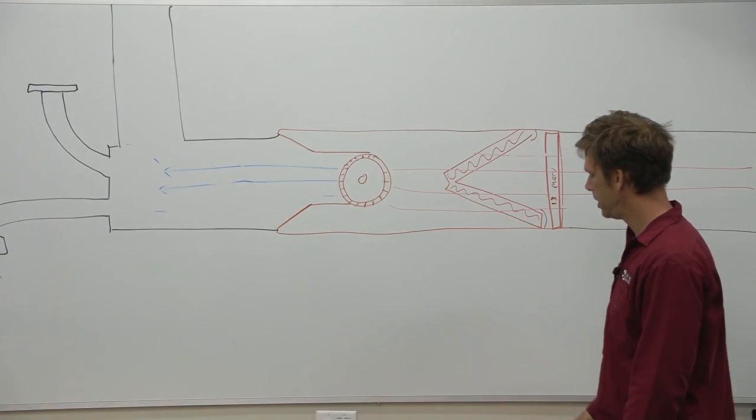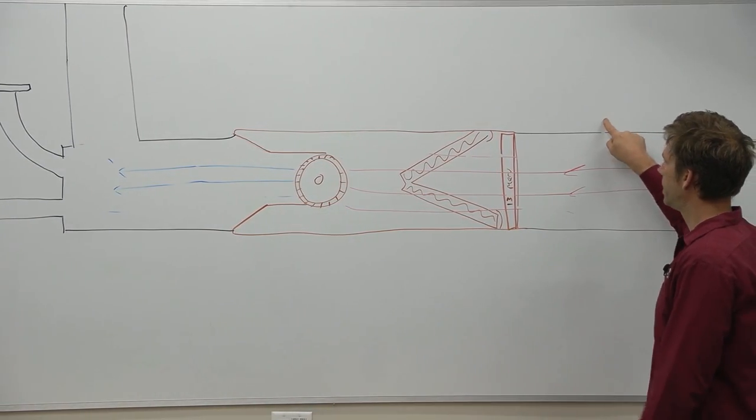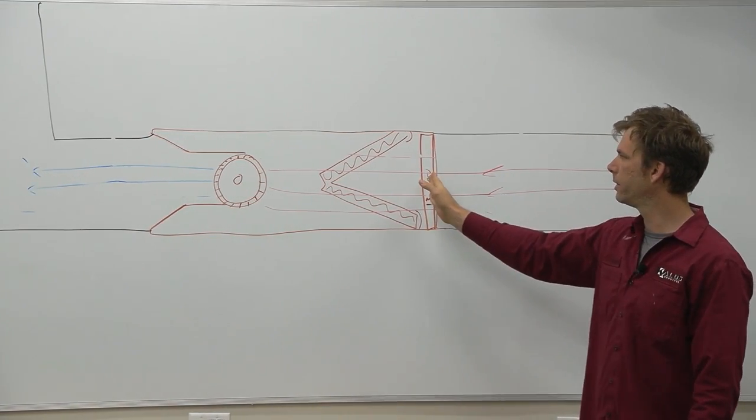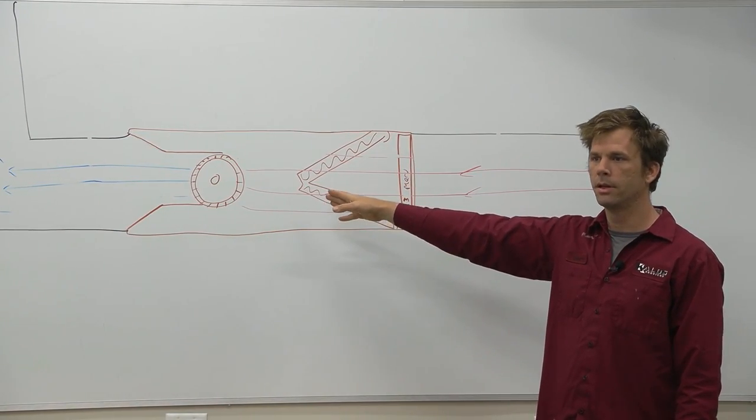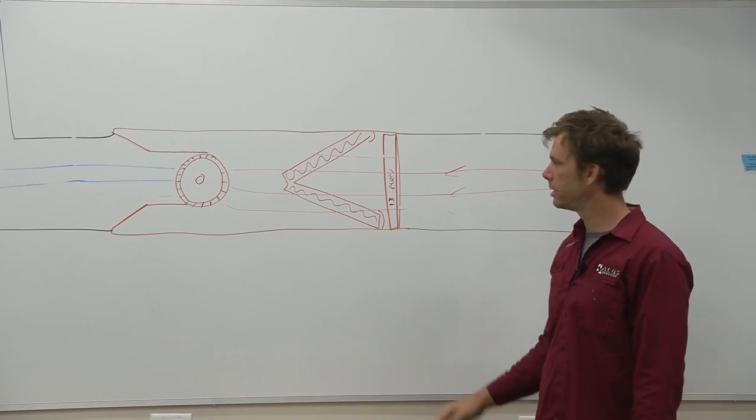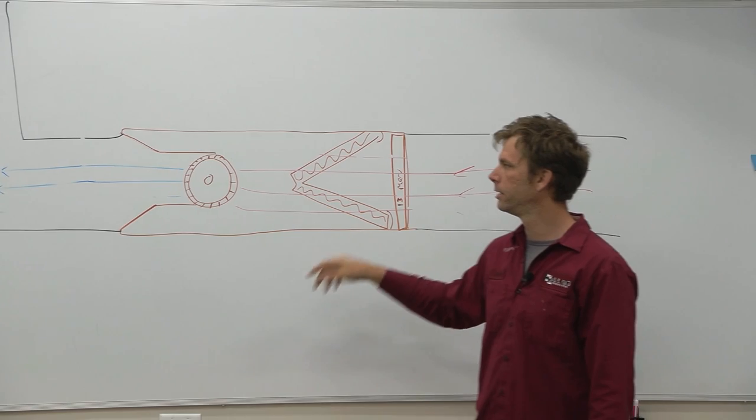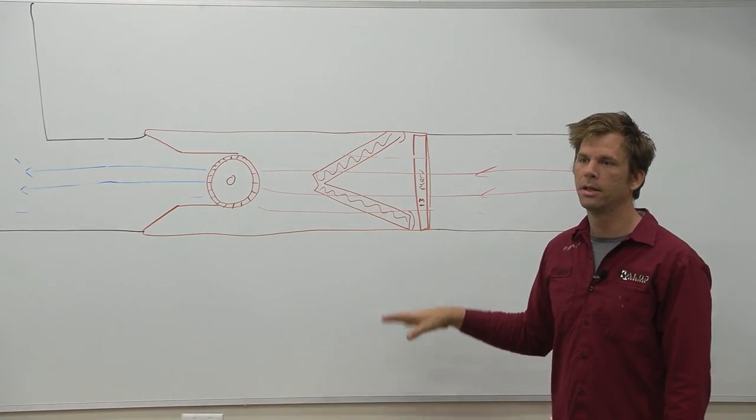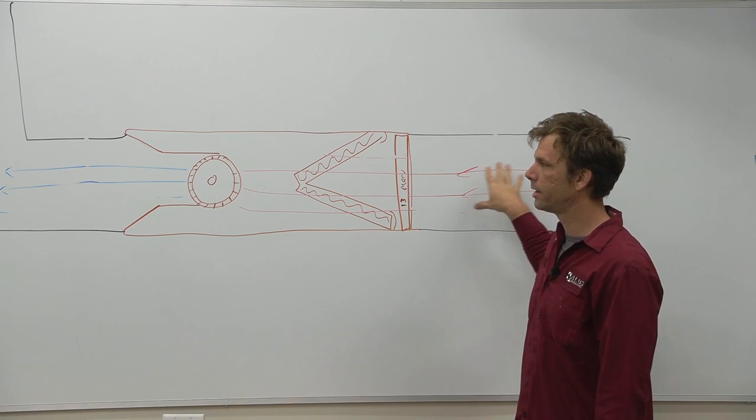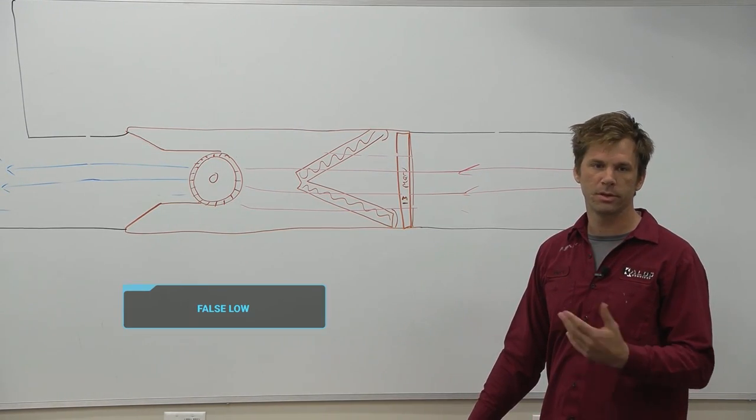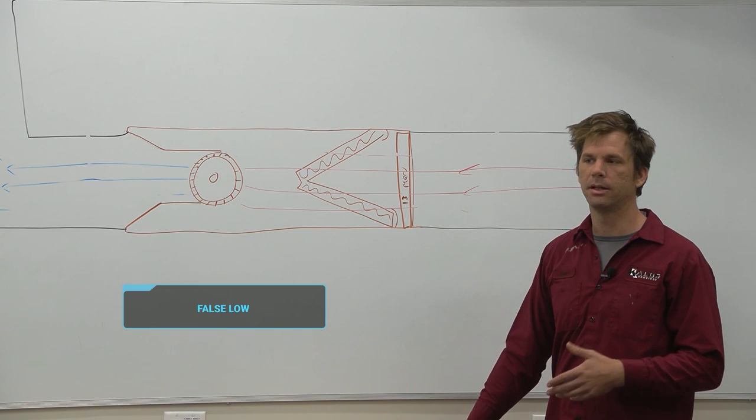We have less airflow that can actually be pulled into the system because of the restriction. We have less airflow then coming into our ductwork, which means there's going to be less external pressure on our system.